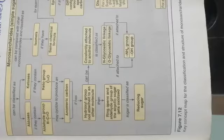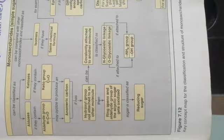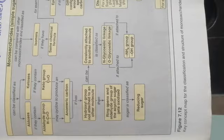Hey everyone, welcome to my channel Lanovaid. Today we will discuss an important concept and topic from biochemistry. The carbohydrates are the most important dietary source for human beings and animals, having many chemical structures, and they can be classified according to their number of carbon atoms.